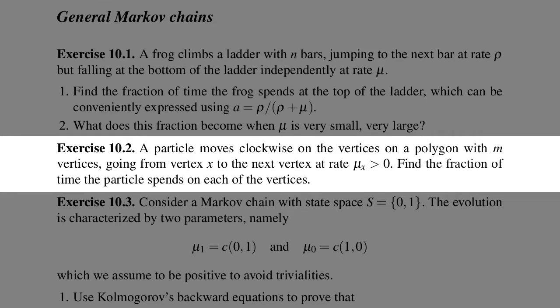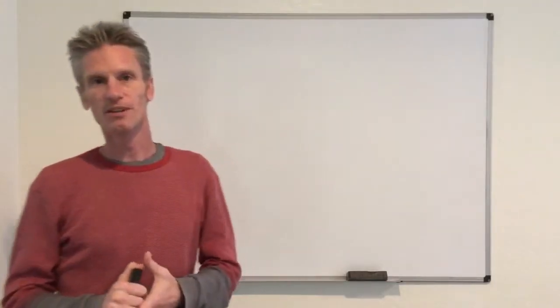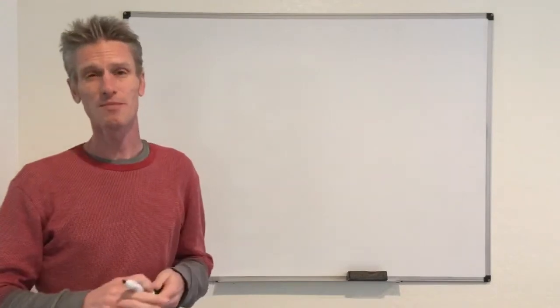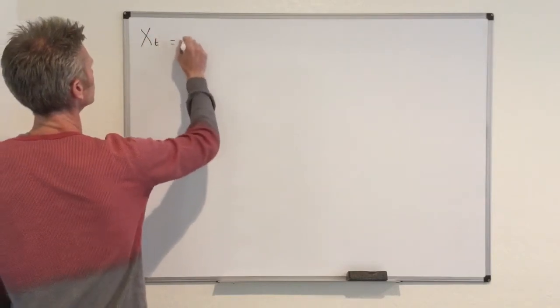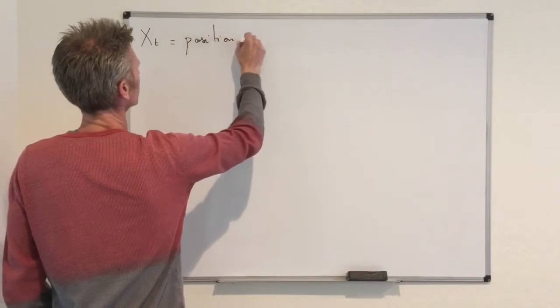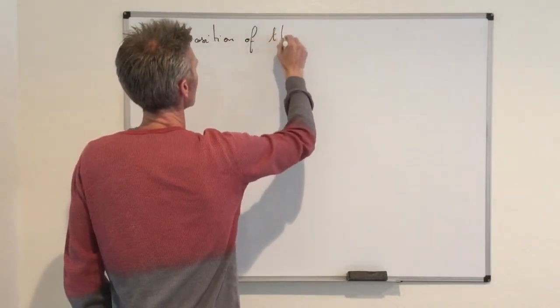The problem can be solved as usual by first proving there is a unique stationary distribution, finding it, and looking at its coefficients. But there is another way to think about the problem using the mean of the exponential random variable, and I'm going to give an alternative answer. To solve this, it's natural to introduce the continuous time Markov chain X(t), which keeps track of the position of the particle at time t.